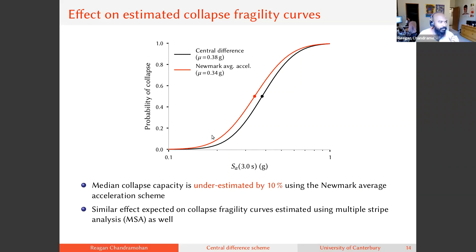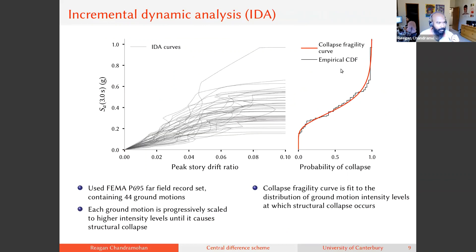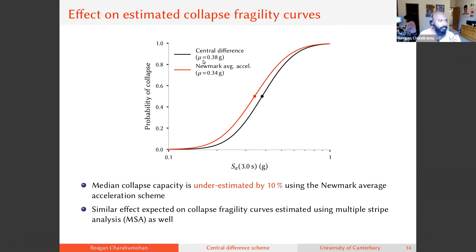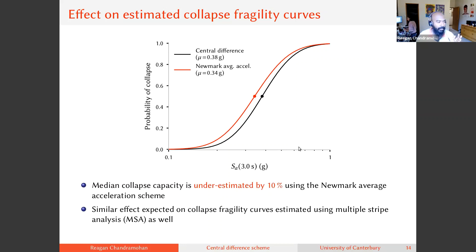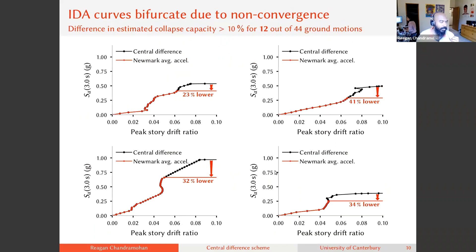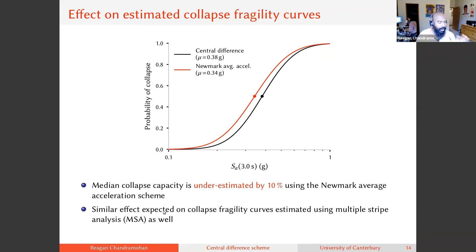The collapse fragility curves — probability of collapse versus ground motion intensity — fitted using both schemes show that the Newmark average acceleration scheme predicts a median collapse capacity of 0.34g, while the central difference scheme gives 0.38g. So Newmark underestimates collapse capacity by about 10 percent in this case, because some ground motions incorrectly predicted smaller collapse capacities due to non-convergence being misidentified as collapse. Similar effects on collapse capacity estimates would be expected in multiple stripe analysis as well.